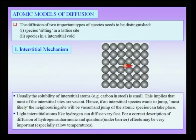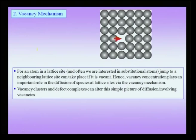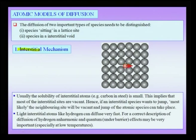If you look at atomic models of diffusion, two kinds of diffusing species are of importance: one are interstitial atoms and one are atoms sitting in the substitutional site. The diffusion we are focusing on in this set of lectures is diffusion in metals. Diffusion in ionic solids and other kinds of solids may have other aspects which are not covered in this basic set of lectures.